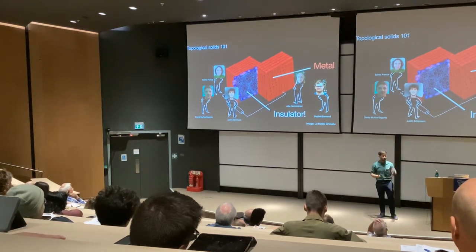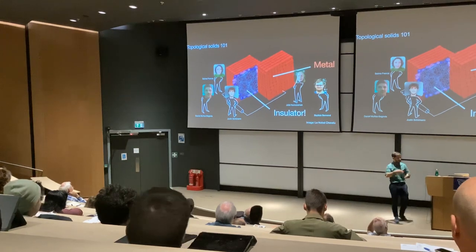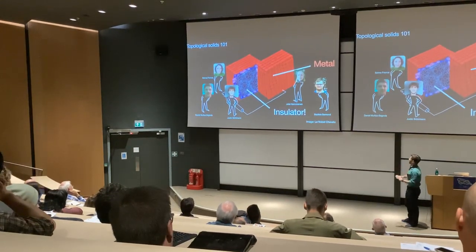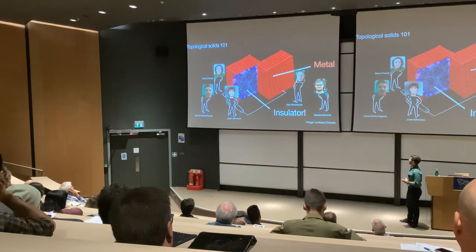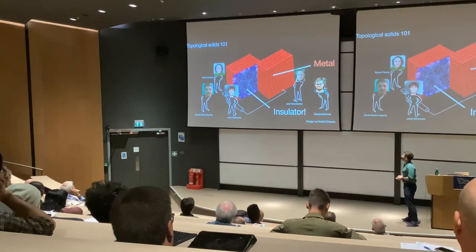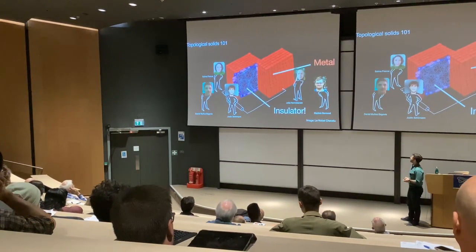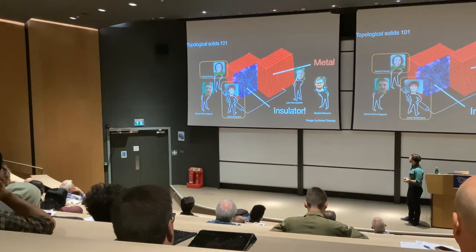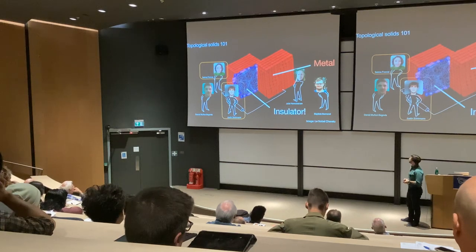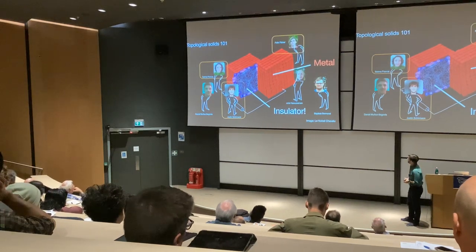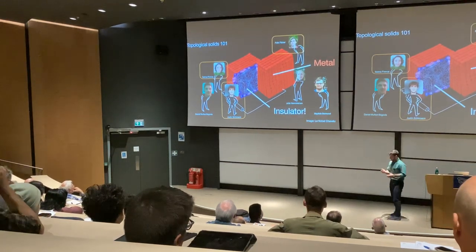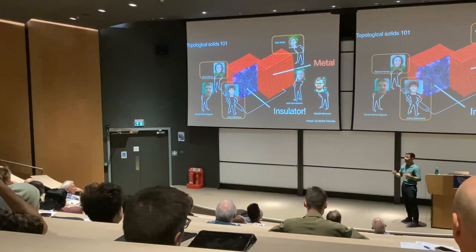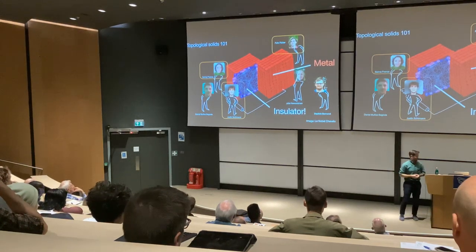The insulators we look at appear very amorphous and disordered — non-crystalline — and that's how I got into looking at aperiodic structures, completely non-periodic and non-crystalline amorphous systems. That's what we do in our group, and we have this idea of what would happen if we put electrons on the hat tiling.